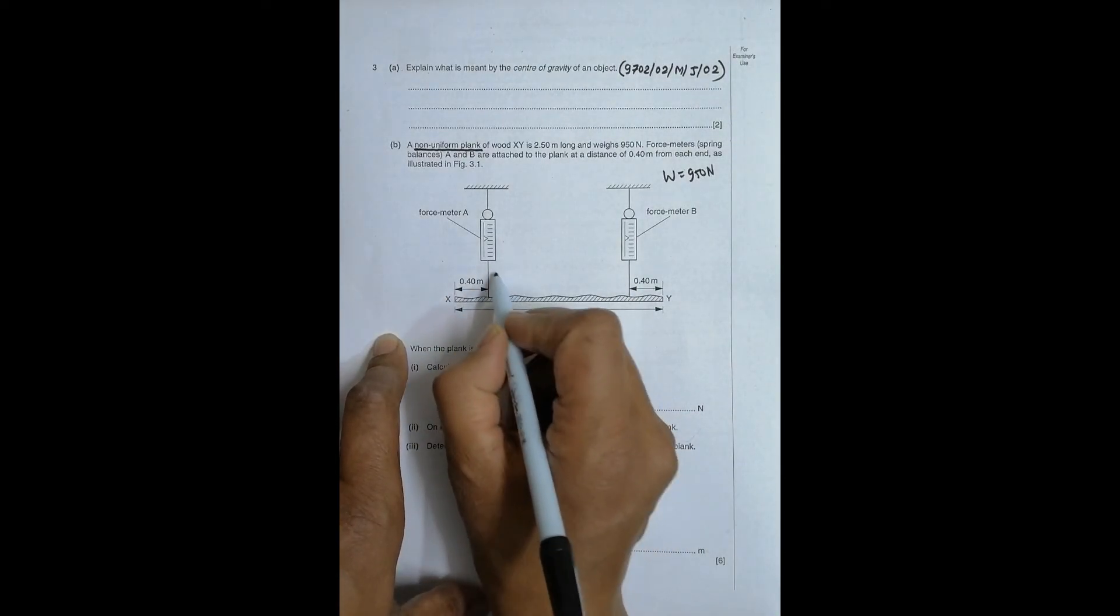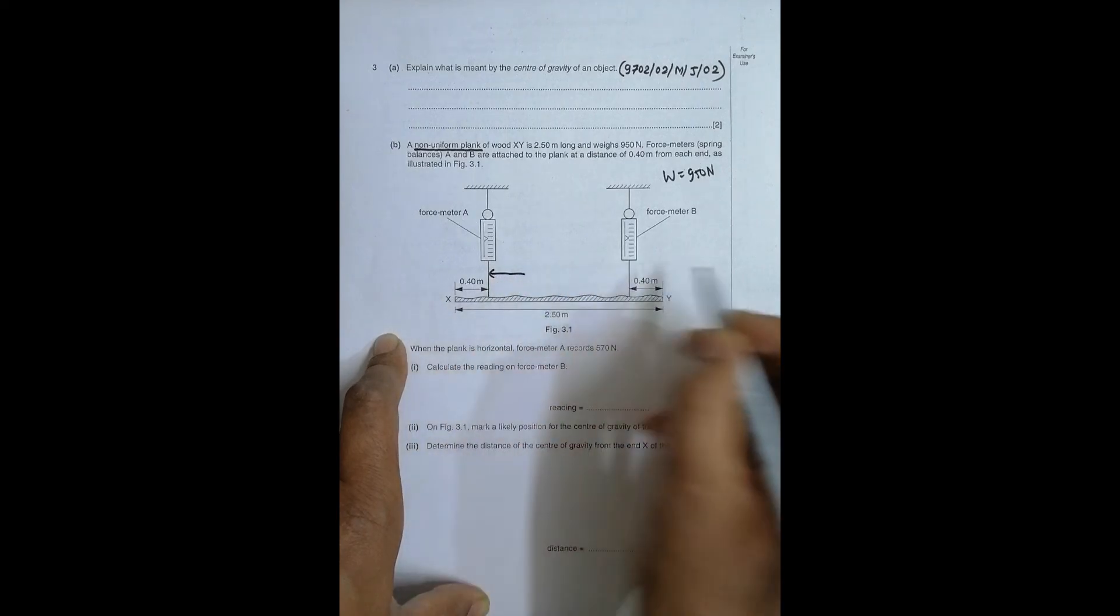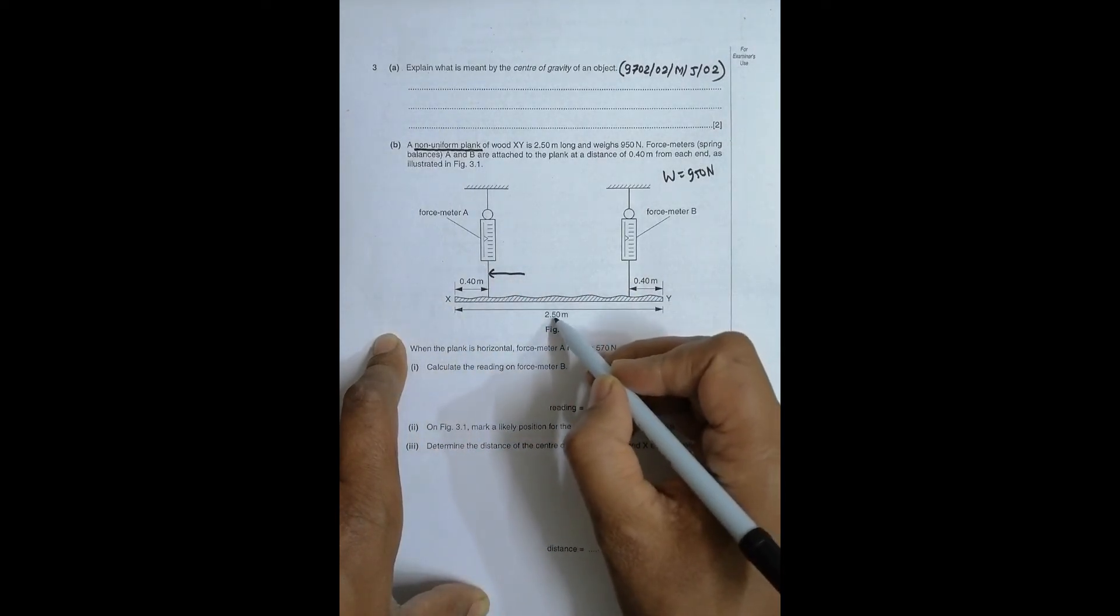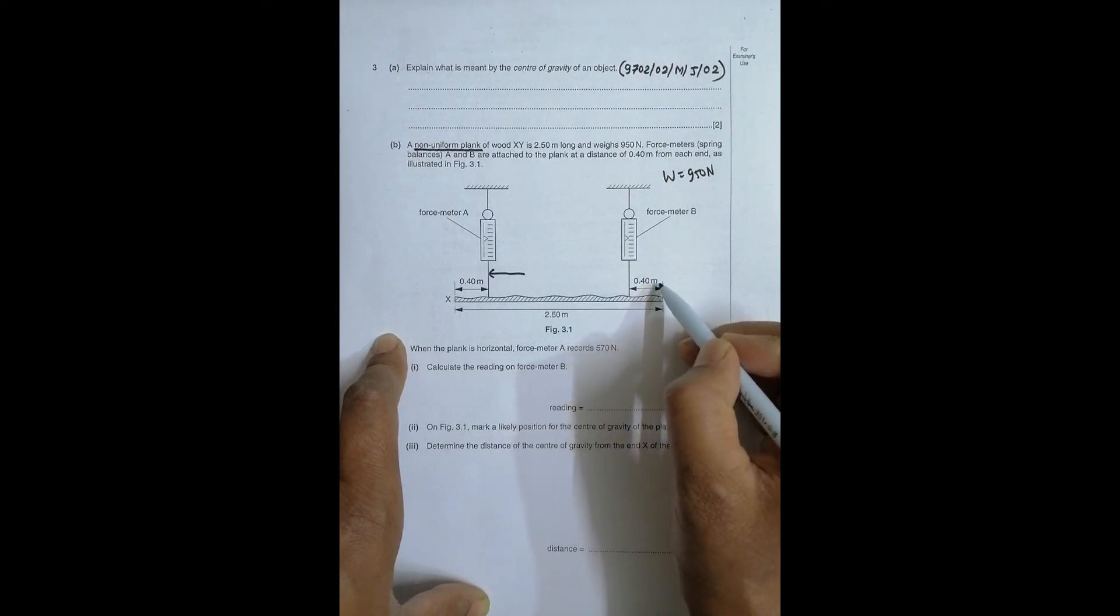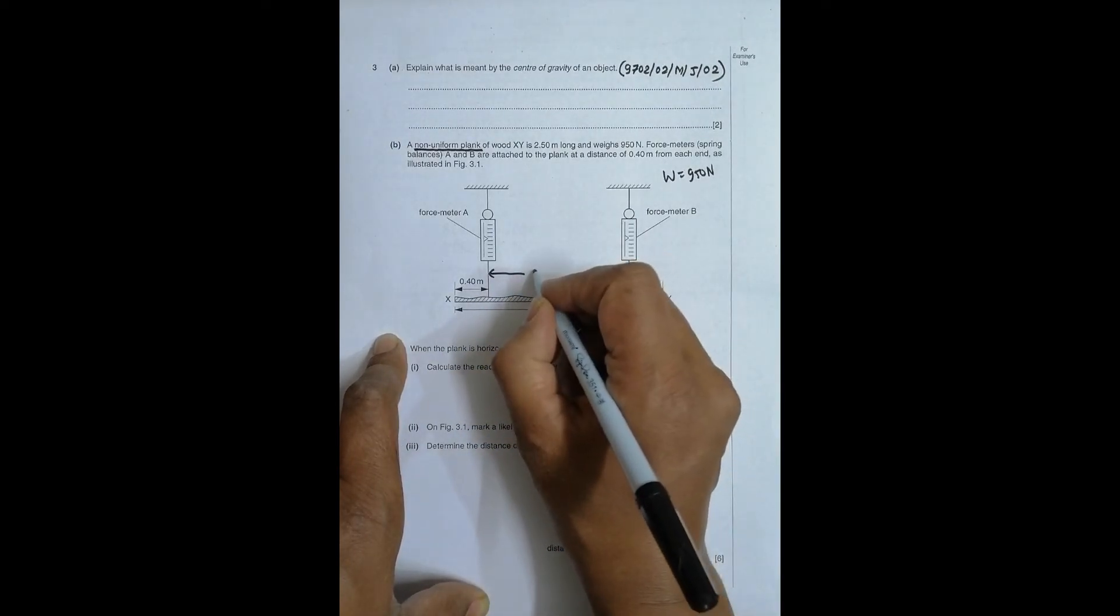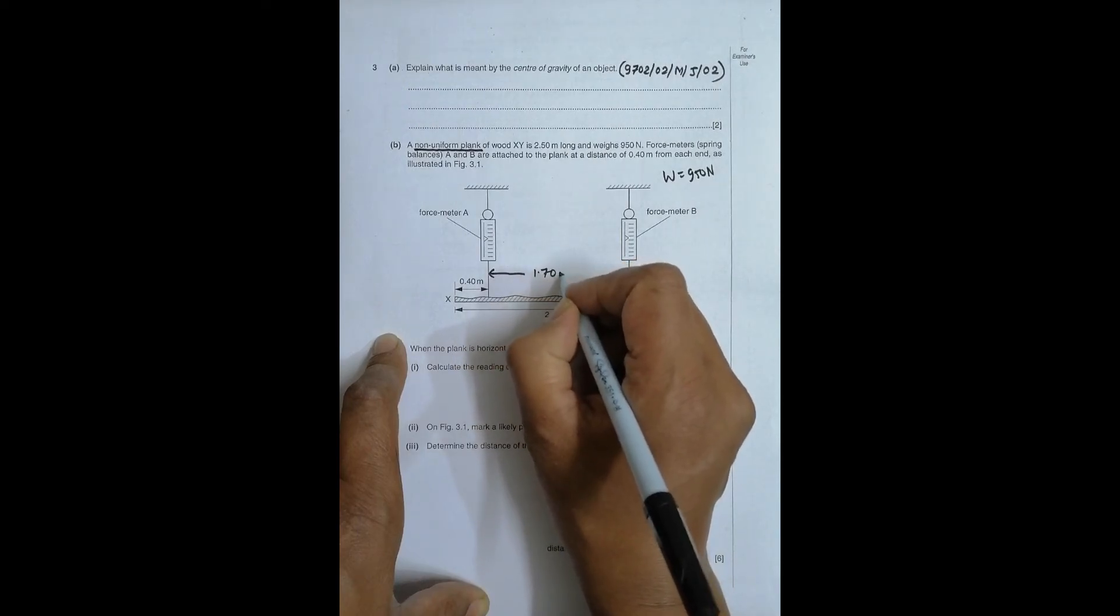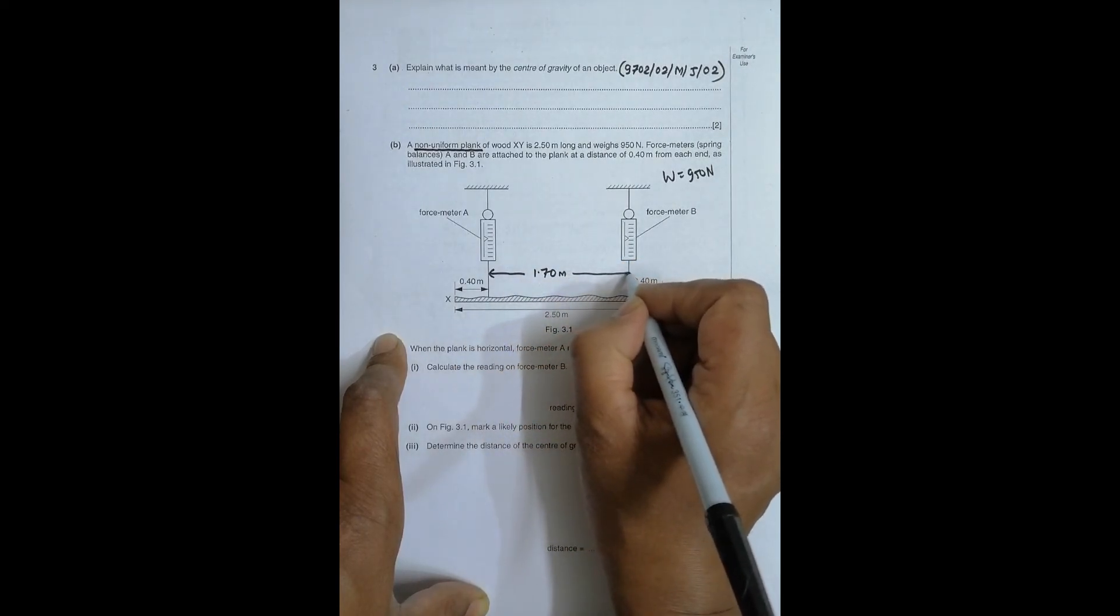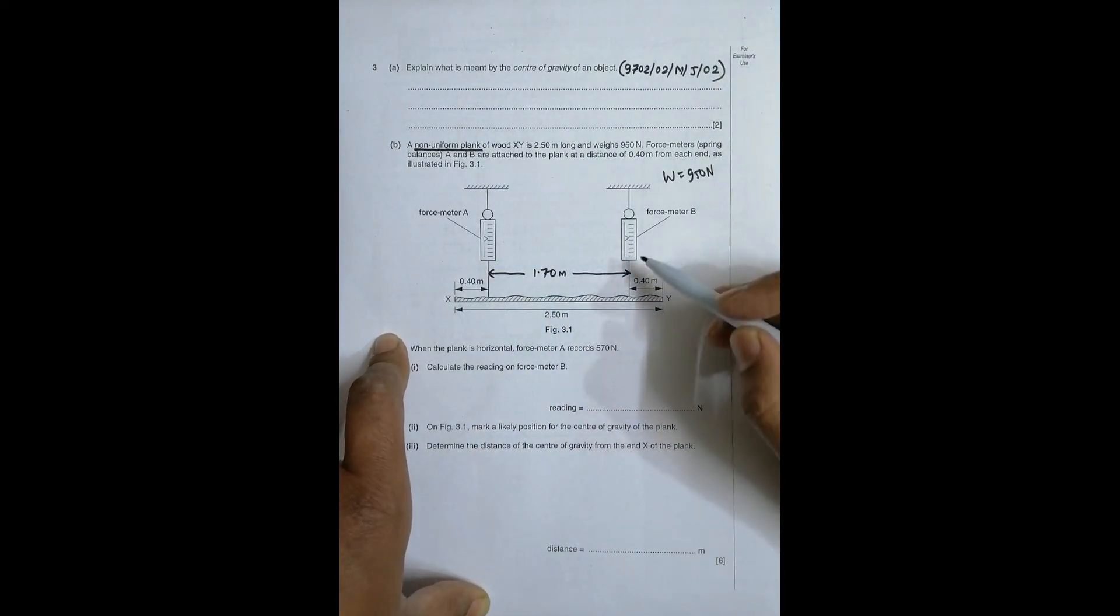So the distance from here to here will be 2.5 minus this minus this. So this will be equal to 2.10 meters and this should be equal to 1.70 meters. I might need this data. That's why I write this distance.